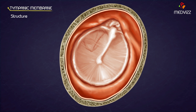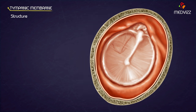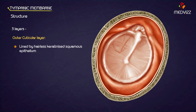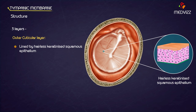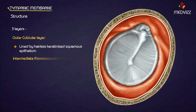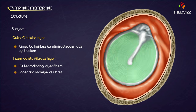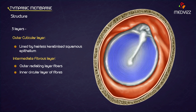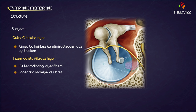Structure. The tympanic membrane is divided into three layers. The outer cuticular layer is lined by hairless keratinized squamous epithelium. The intermediate fibrous layer consists of an outer radiating and inner circular layer of fibers; the radiating fibers radiate from the handle of the malleus, while the circular fibers are present more in the periphery.